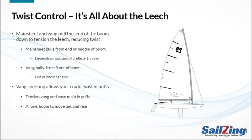This leads us to the concept of vang sheeting. In vang sheeting, you tension the vang to flatten the sail and then ease the mainsheet in puffs. Easing the main allows the boom to move out to reduce the angle of attack down low, and also to rise to let the leech twist off to depower the top of the sail. Vang sheeting is very important, but it has some limitations, which we'll discuss shortly.